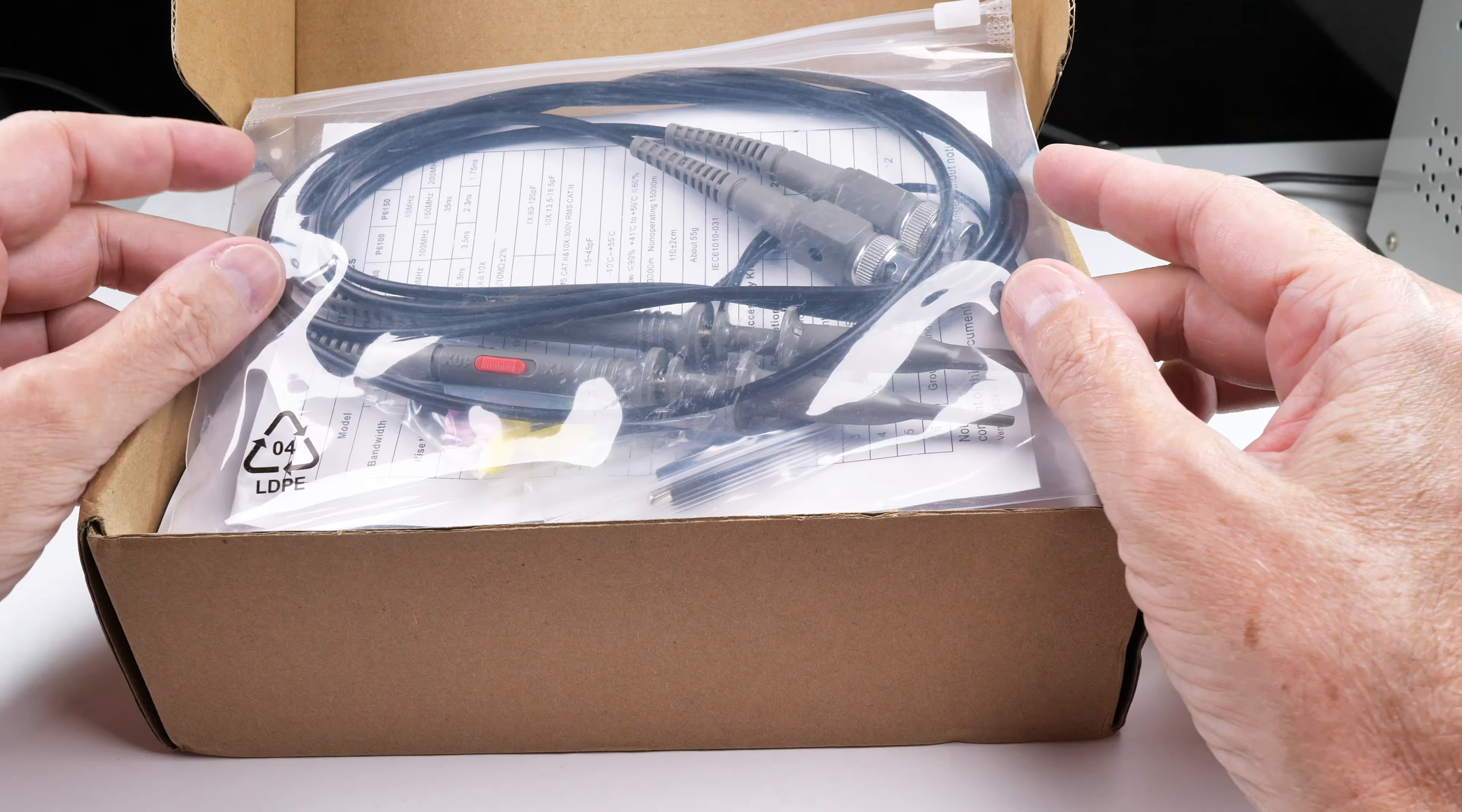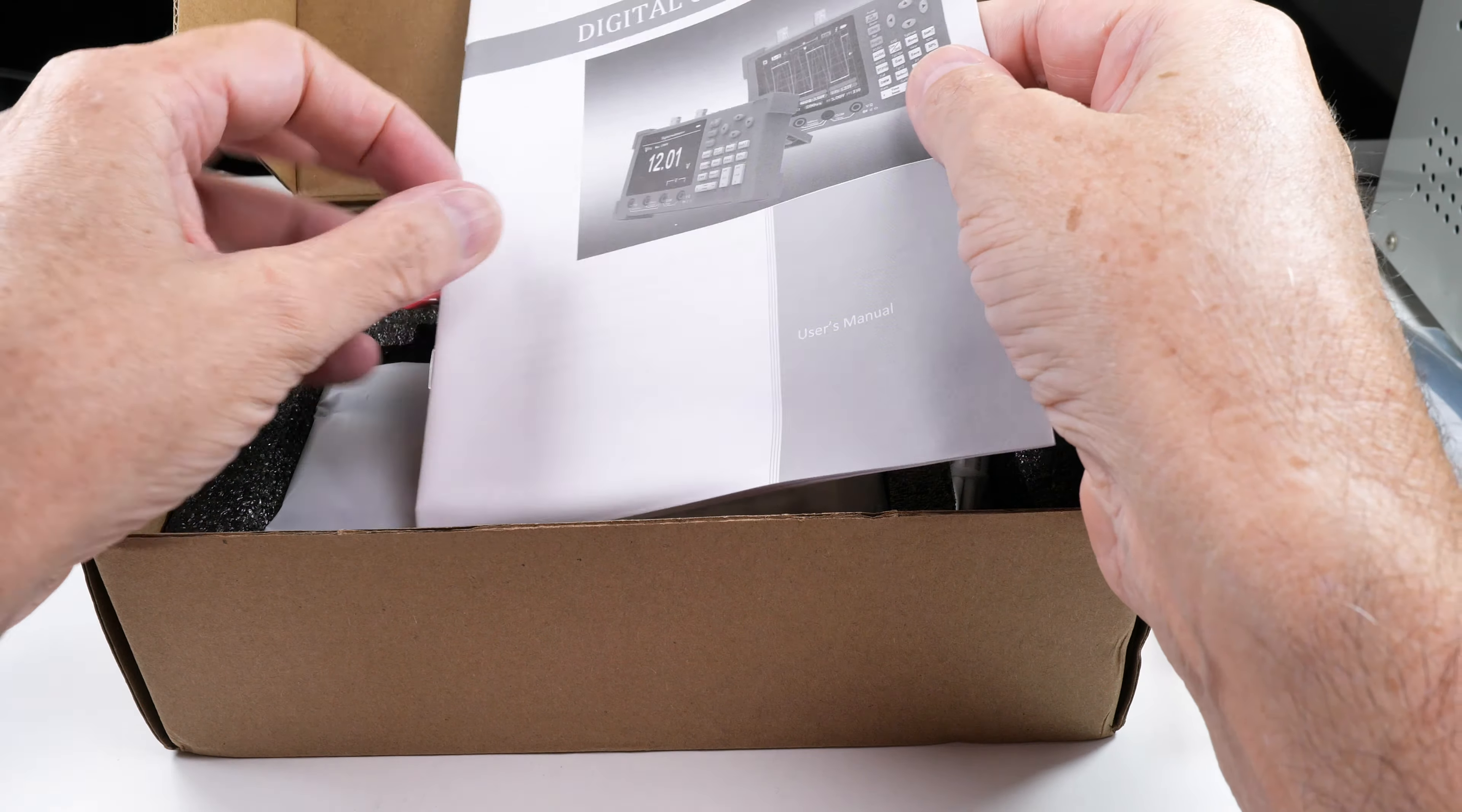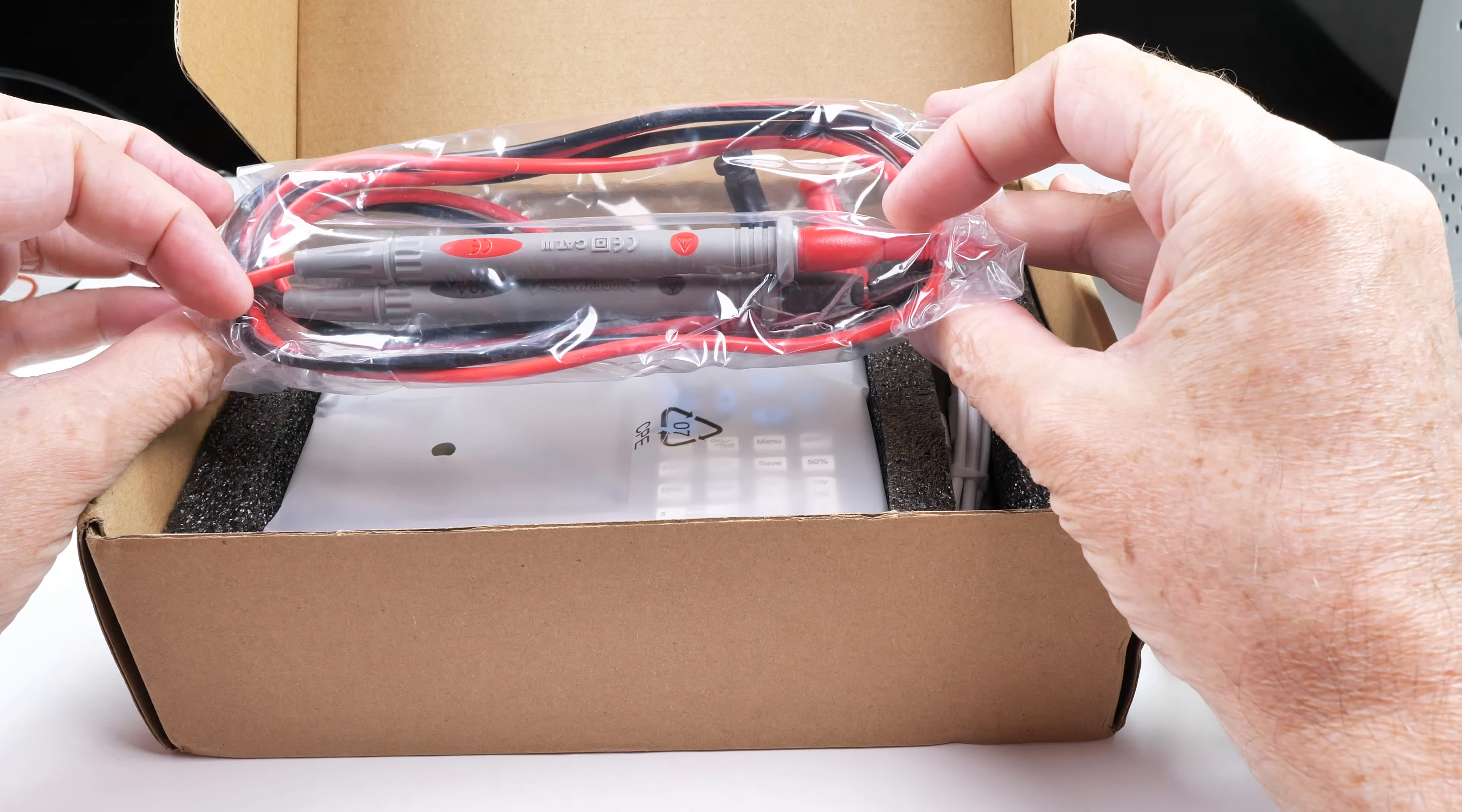It comes with two probes, different identifier rings for the probes, a basic packing list, looks like an instruction manual. What else do we have back here?